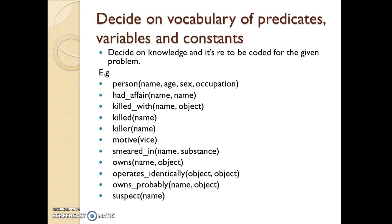The third step is about deciding on the vocabulary of predicates, variables, and constants. After goal formulation in step 1 and knowing how complicated the world is from step 2, one can decide on knowledge to be coded for the given problem. This step is completed with a list of all predicates, their argument types, variables, and constants — together called the vocabulary of the solution.